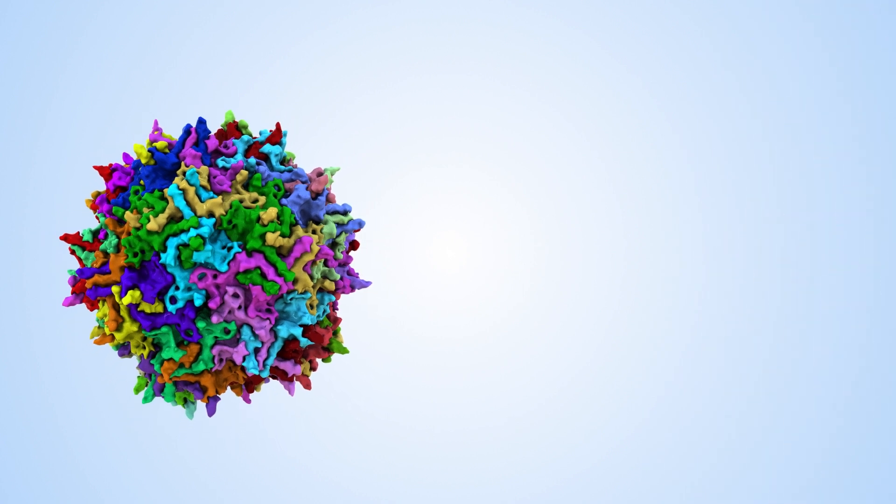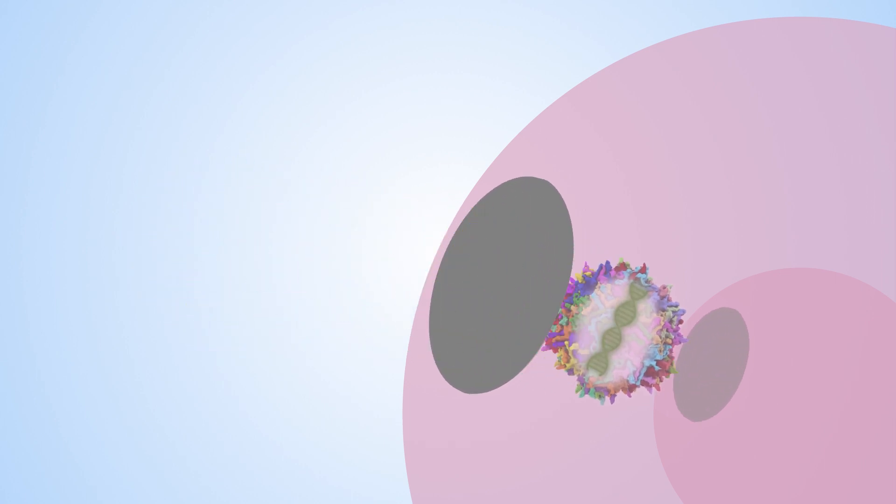AAV vectors are made from viruses that can target the cells of interest without causing disease. Once in the cell, the AAV vector releases the DNA encoding the missing enzyme, which will be produced by the internal machinery of the target cell. The liver cells are now able to produce OTC again.